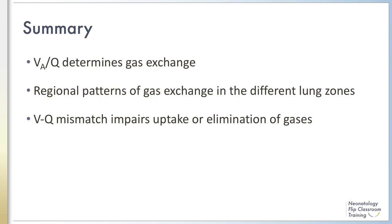In this module, we discussed how the ventilation perfusion ratio determines the gas exchange in any single lung unit and that regional differences of ventilation perfusion or VQ in the lung causes patterns of regional gas exchange. VQ mismatch impairs the uptake or elimination of all gases by the lung. Elimination of carbon dioxide is impaired by VQ mismatch, but can be improved by increasing ventilation. In contrast, hypoxemia resulting from VQ mismatch cannot be eliminated by increasing ventilation.